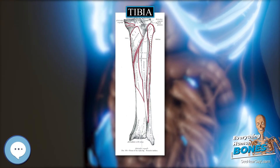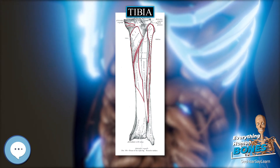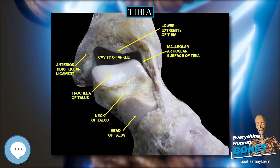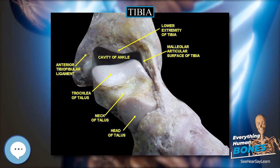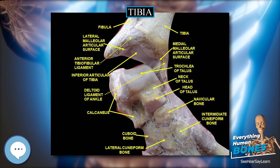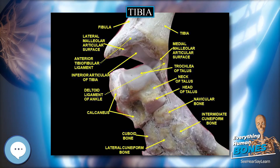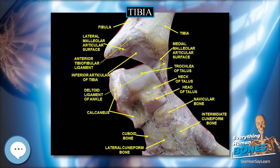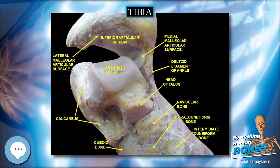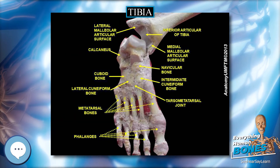Surfaces. The medial surface is smooth, convex, and broader above than below. Its upper third, directed forward and medialward, is covered by the aponeurosis derived from the tendon of the sartorius, and by the tendons of the gracilis and semitendinosus, all of which are inserted nearly as far forward as the anterior crest; in the rest of its extent it is subcutaneous.